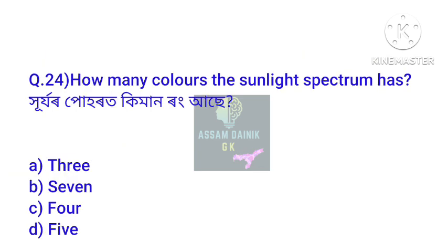Question number 24. Hujhator puhorot kiman rong ase — how many colors does the sunlight spectrum have? The answer is 7. Hujhator puhorot prae hat pokaror rong pua dekhazai. Option number B — 7.